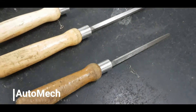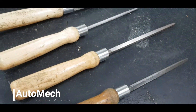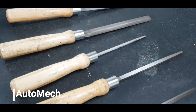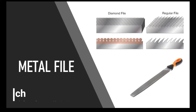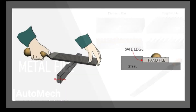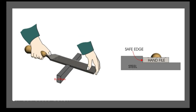Last on our list, but probably one of the most important tools during project making at Otomec, is the metal file. It is a hardened steel tool featuring parallel rows of teeth or cutting edges on its surfaces. The rows are usually diagonal to the edge, and one end of the file is shaped to fit into a handle.